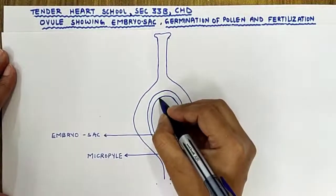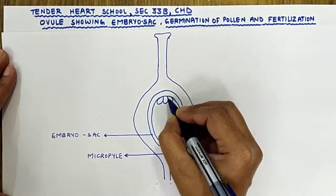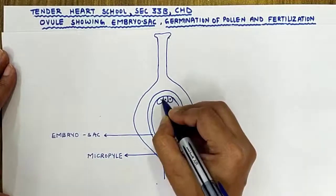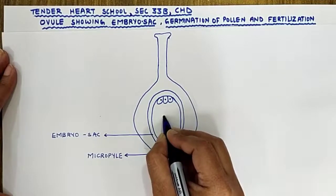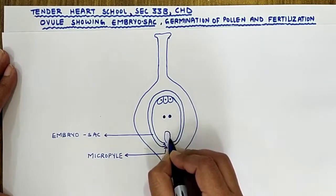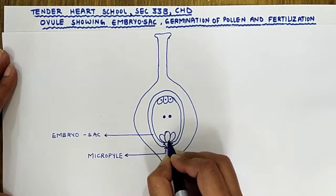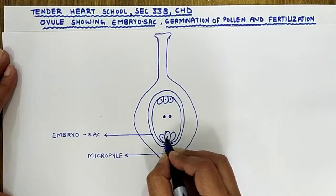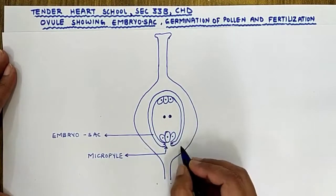Inside the embryo sac, on the upper side we have three cells called the antipodal cells. In the center we have two polar nuclei, and at the base we have the egg cell, which is surrounded by two synergids. So in total, inside the embryo sac we have seven cells.